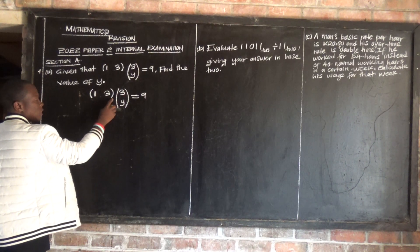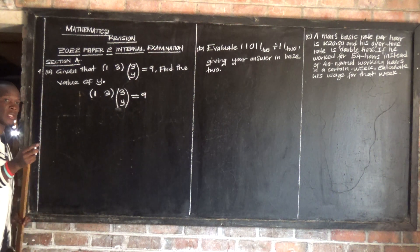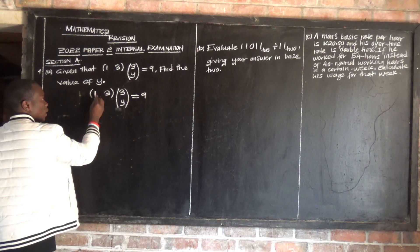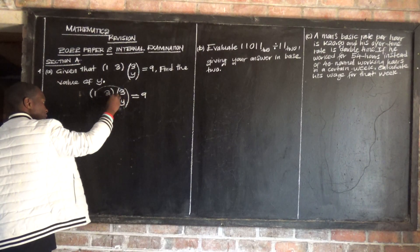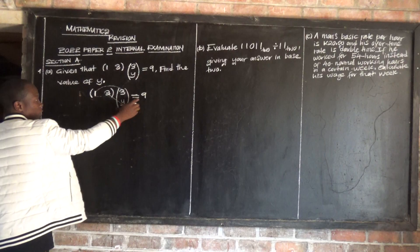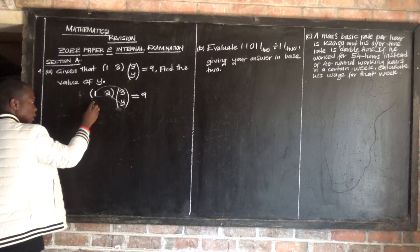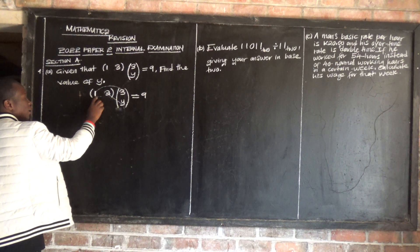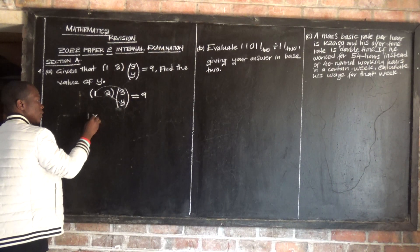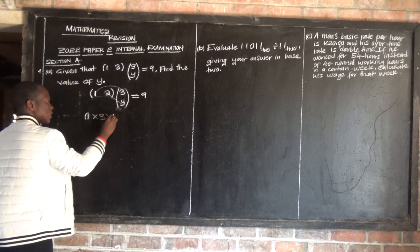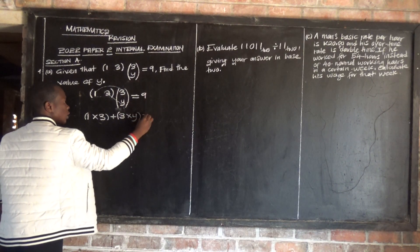This matrix is a 1 by 2, and multiplied by this matrix which is a 2 by 1, we are going to get positive 9. We know that when we multiply matrices we say row by column. So when we multiply 1 by 3, then 3 by y, we are supposed to get positive 9. So we multiply: 1 by 3, the first entry in the first matrix by the first entry in the second matrix. So we say 1 times 3, plus 3 times y, is equal to positive 9.